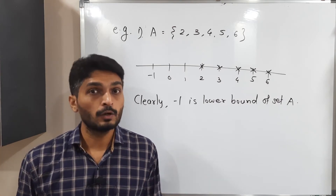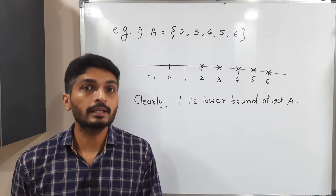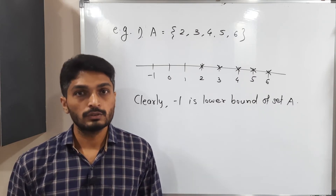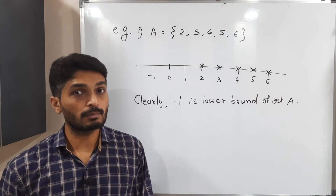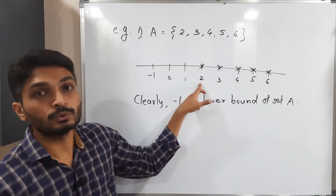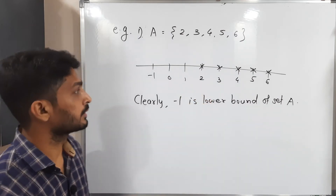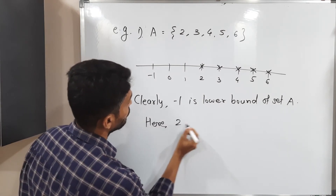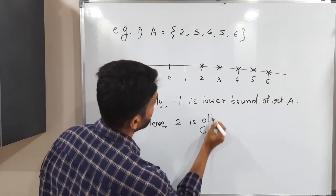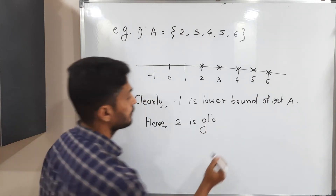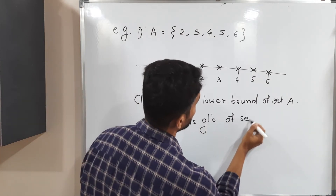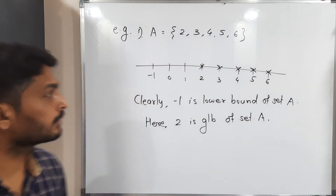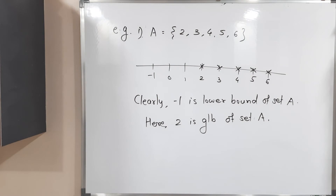We can find many lower bounds, but we are interested in the greatest lower bound, and there is only one greatest lower bound. That is 2 — 2 is the greatest lower bound, or infimum, of set A.